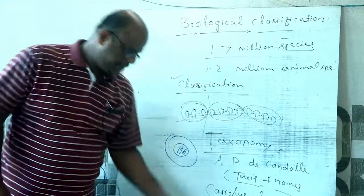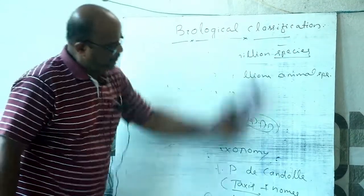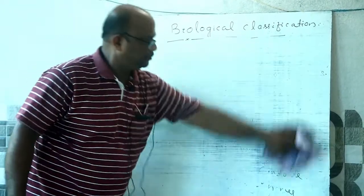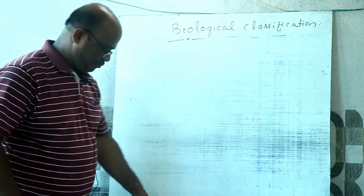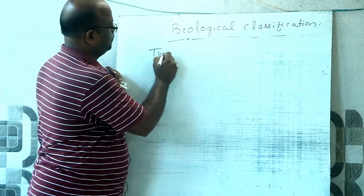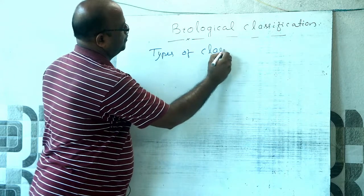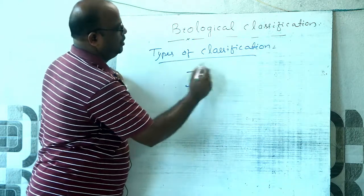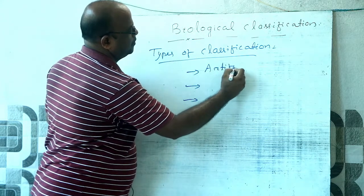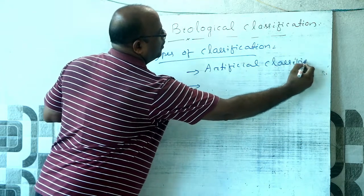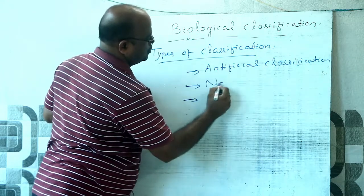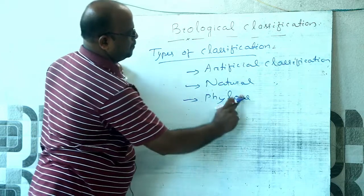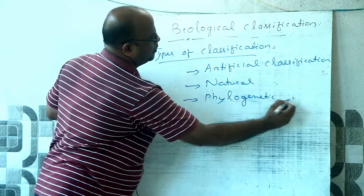Let us discuss types of classification. Classification is of three different types: number one, artificial classification; number two, natural classification; and number three, phylogenetic classification.